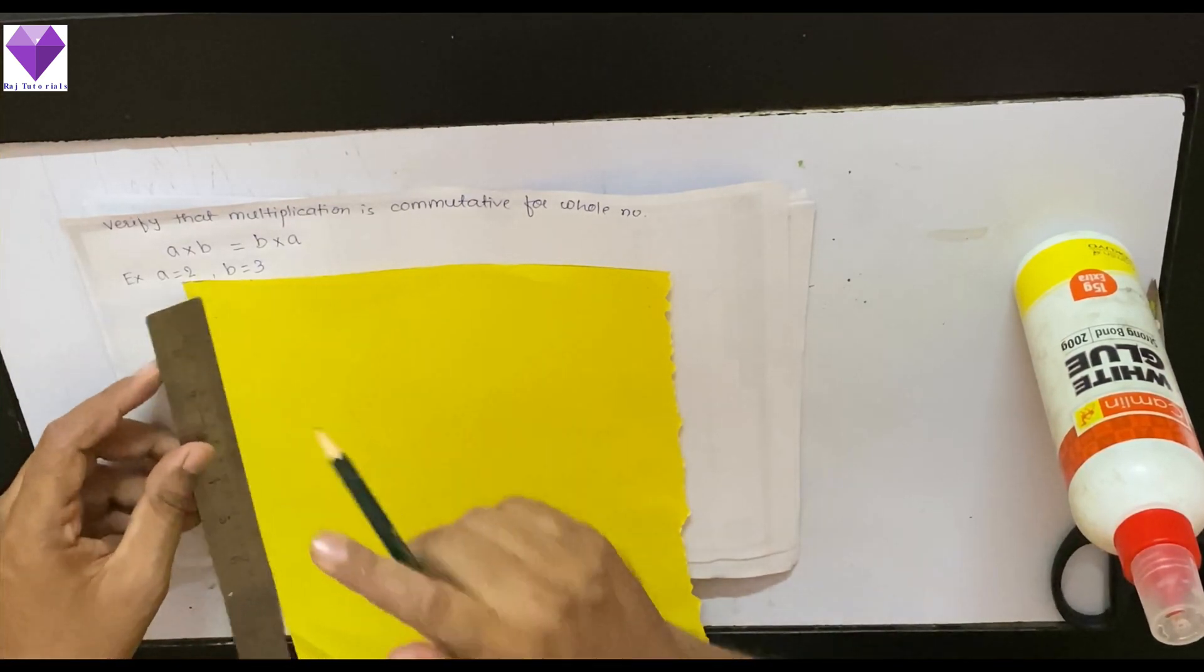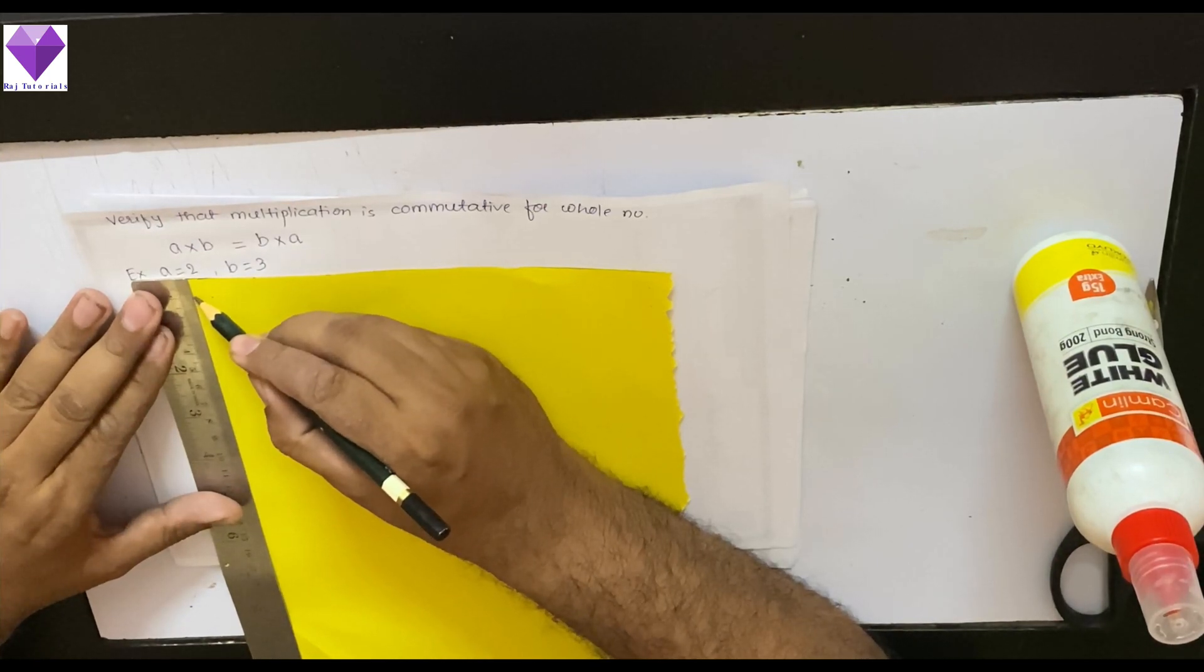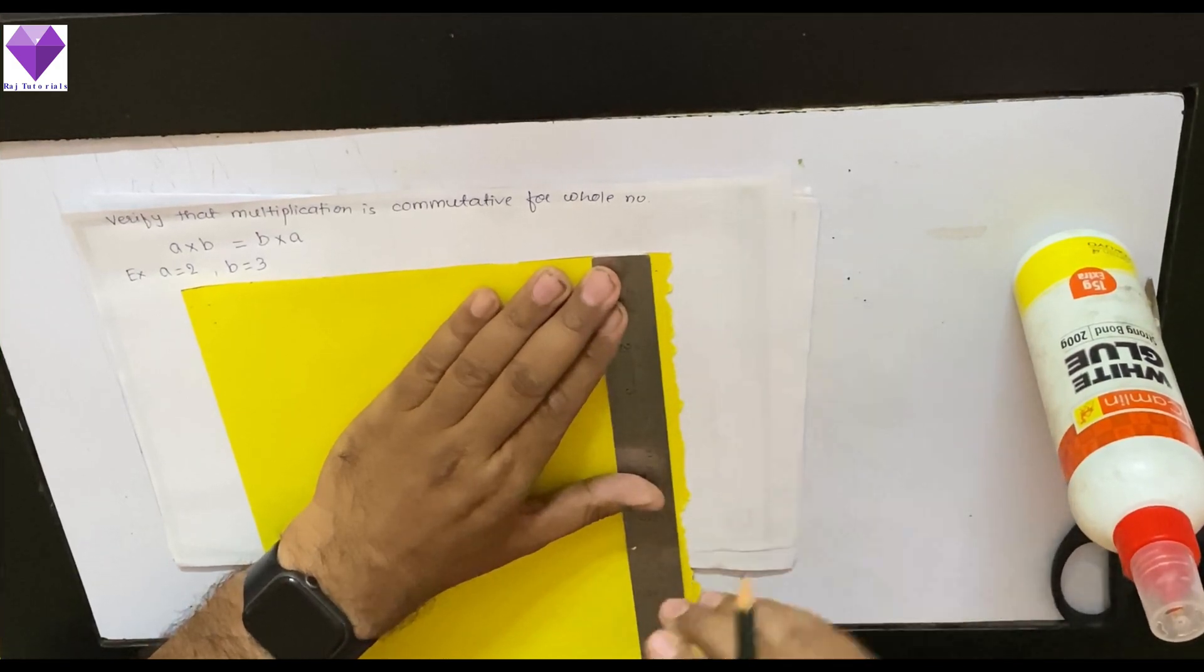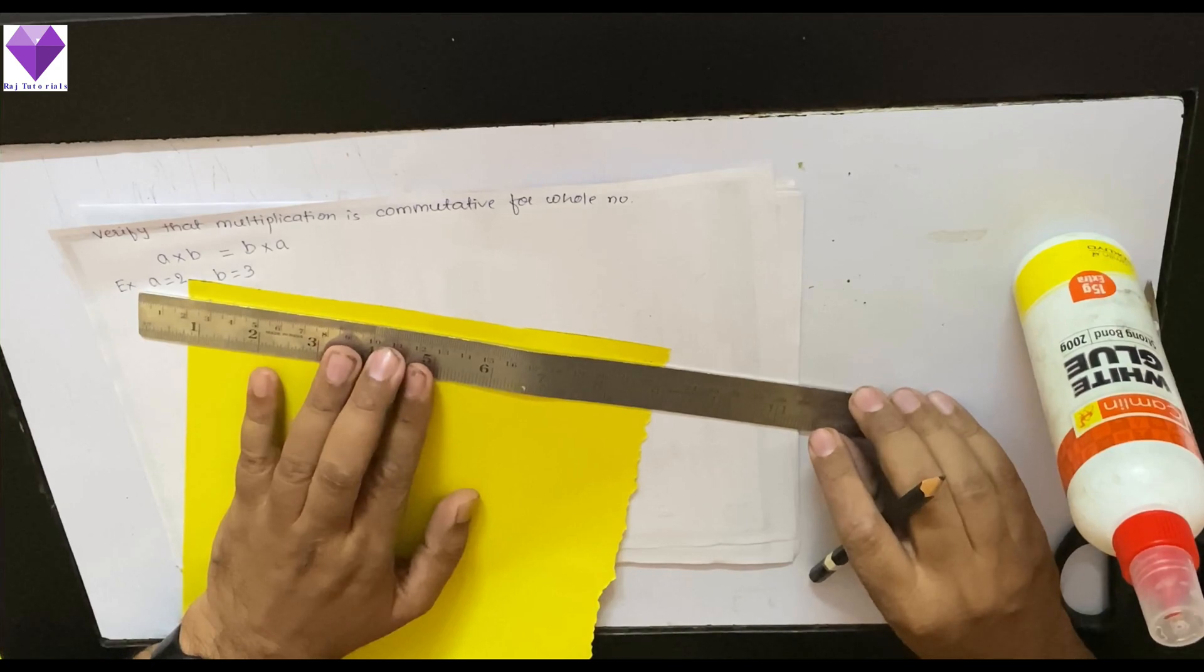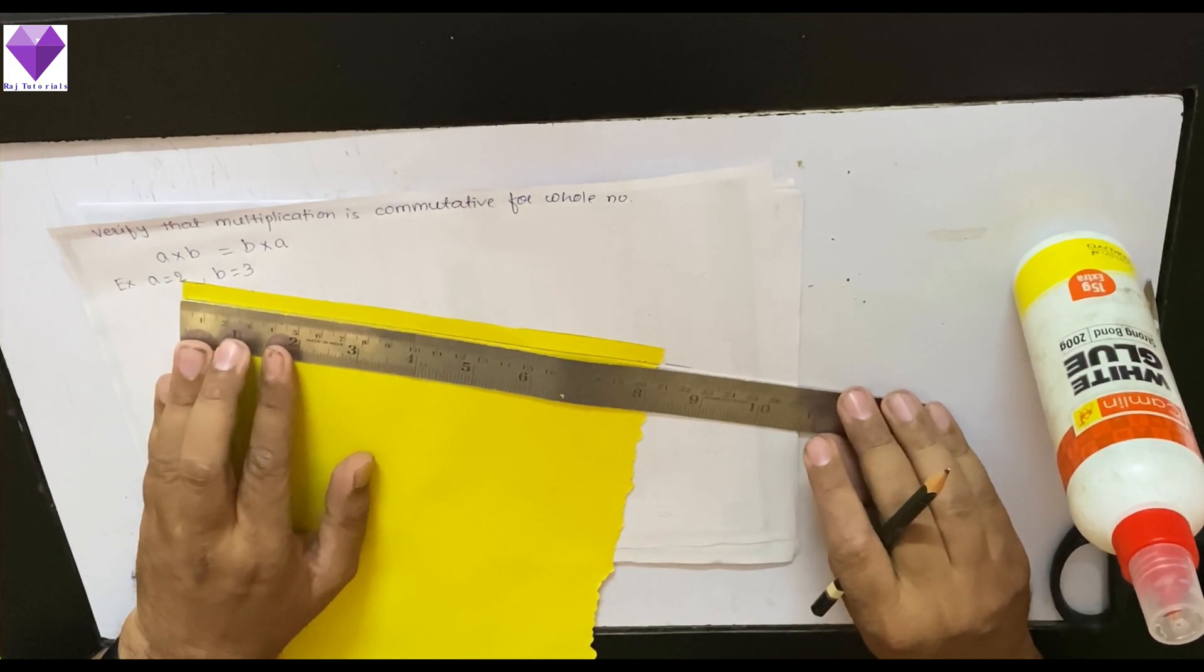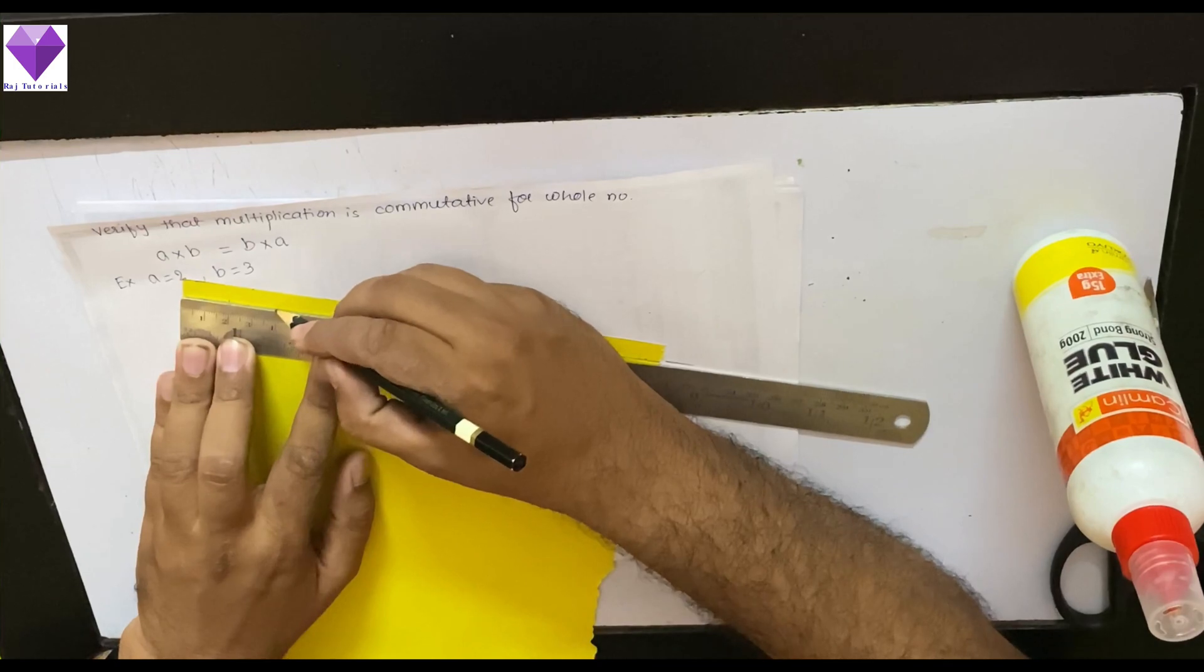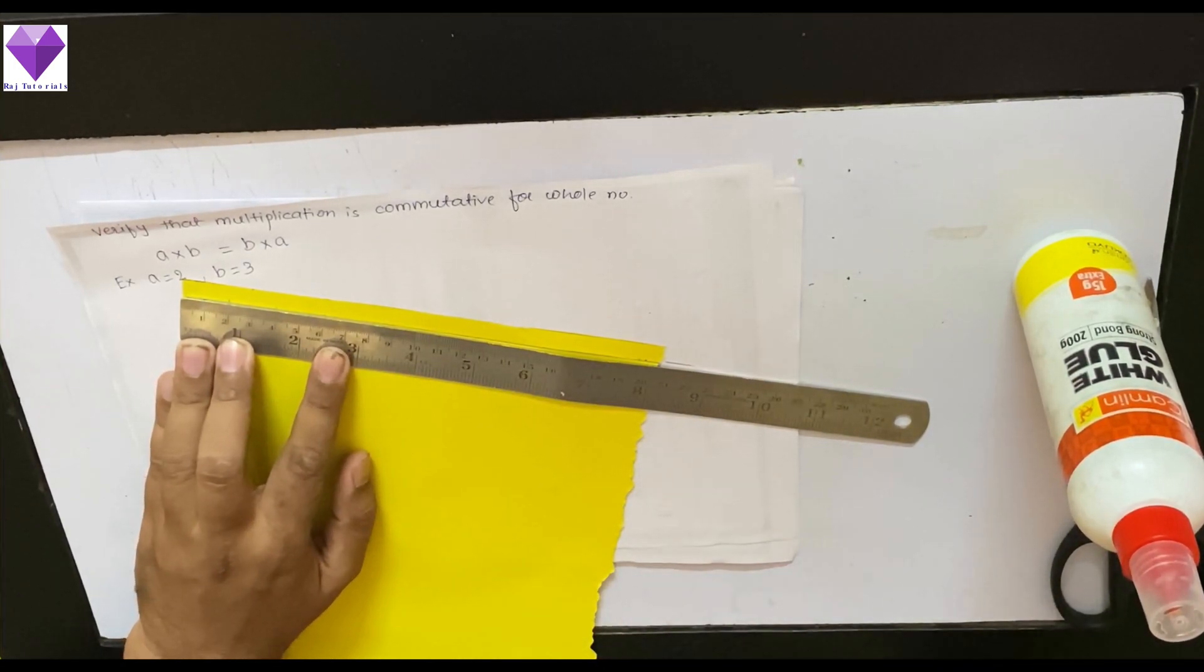Now, first of all, I will take 1 centimeter broad strip and I am joining that line. On this line, I will cut 3 strips of 2-2 centimeter. Now, I will cut these 3 strips which I have drawn.